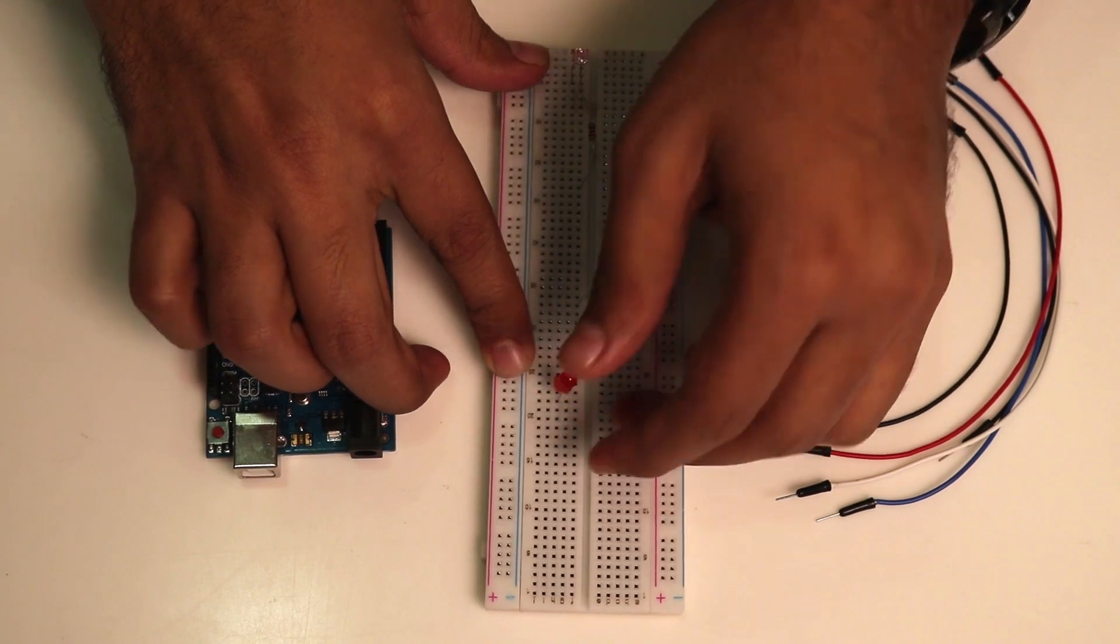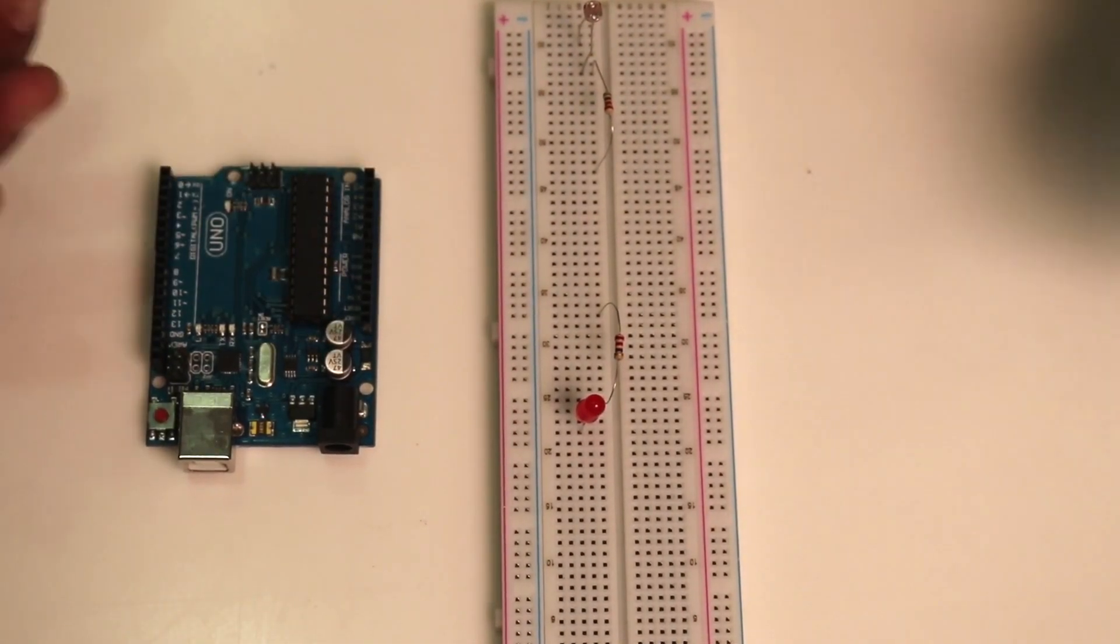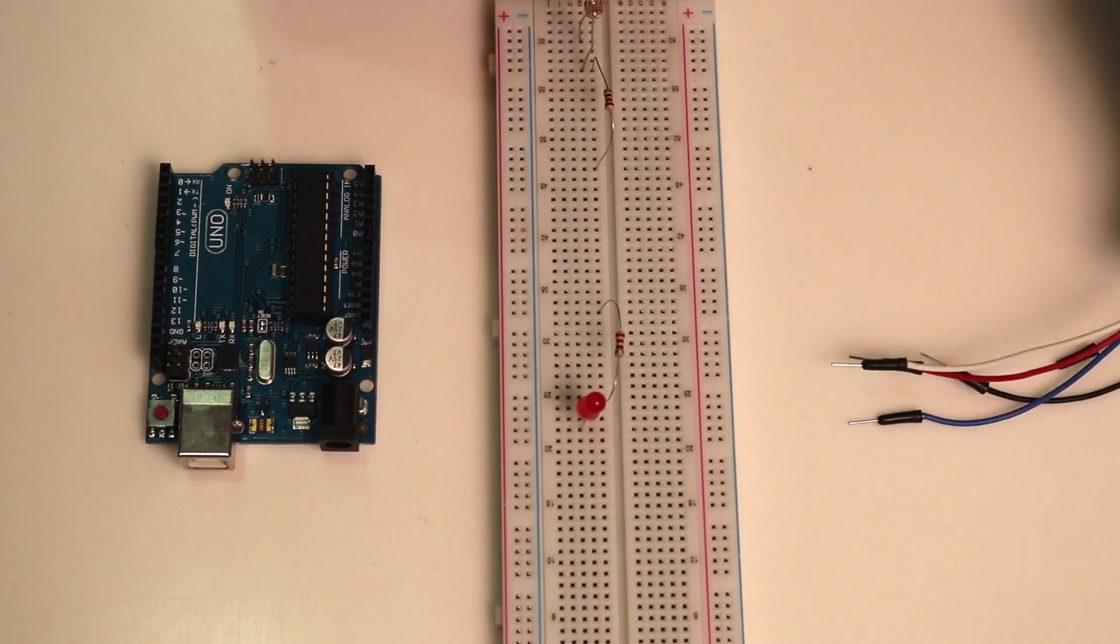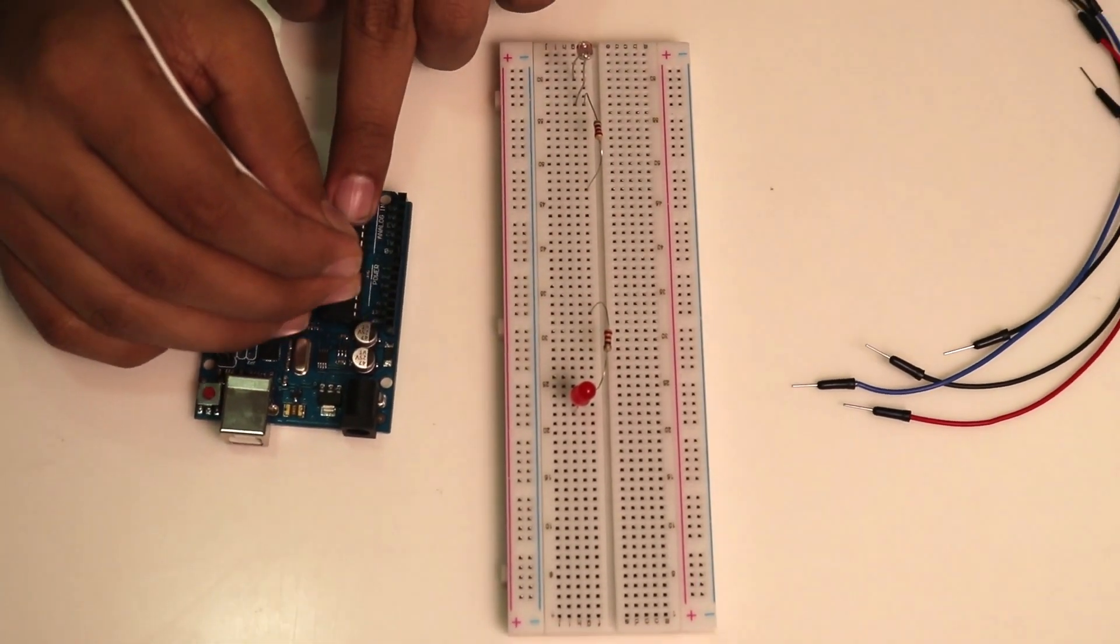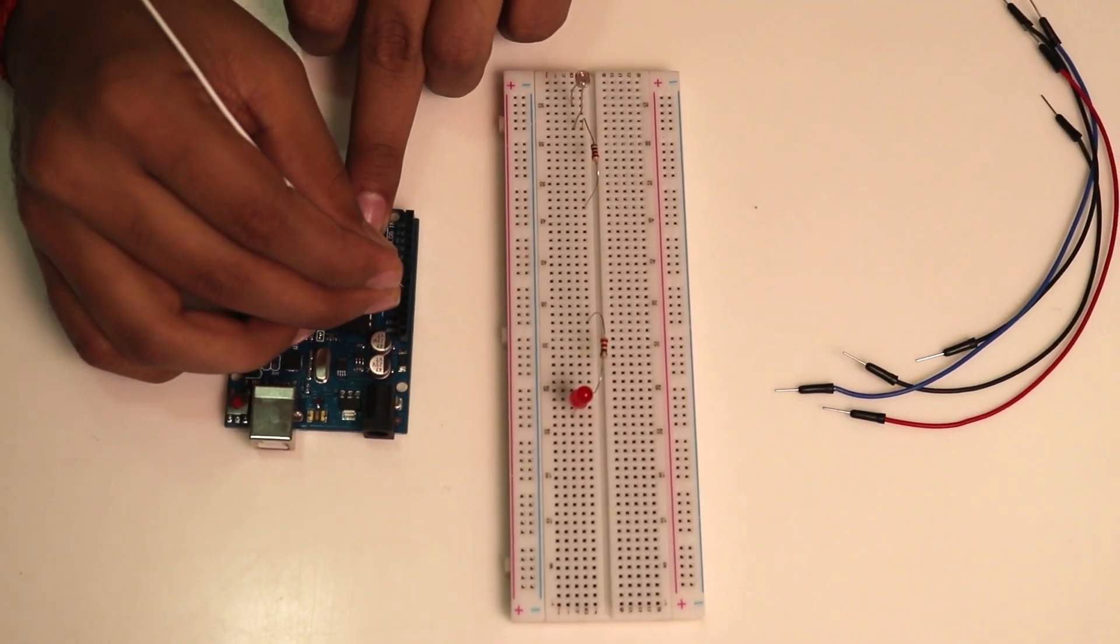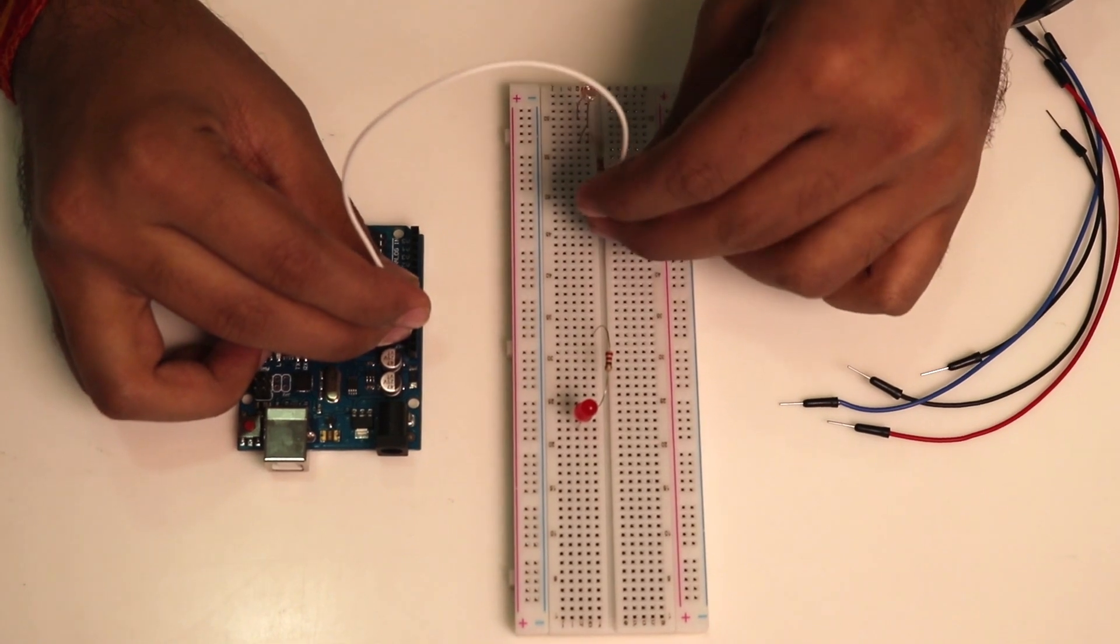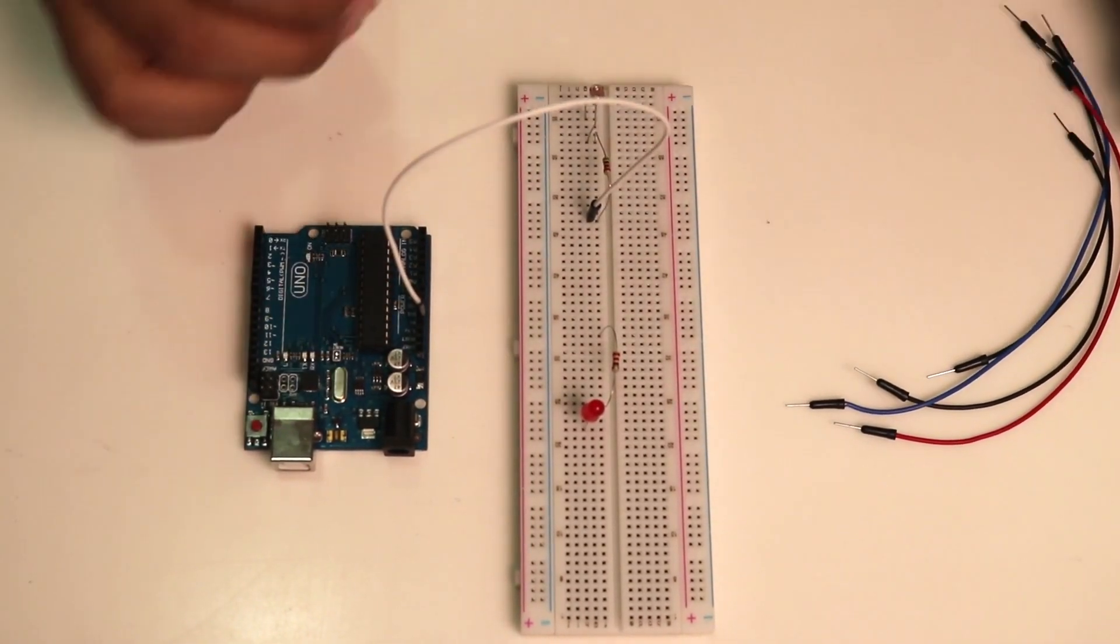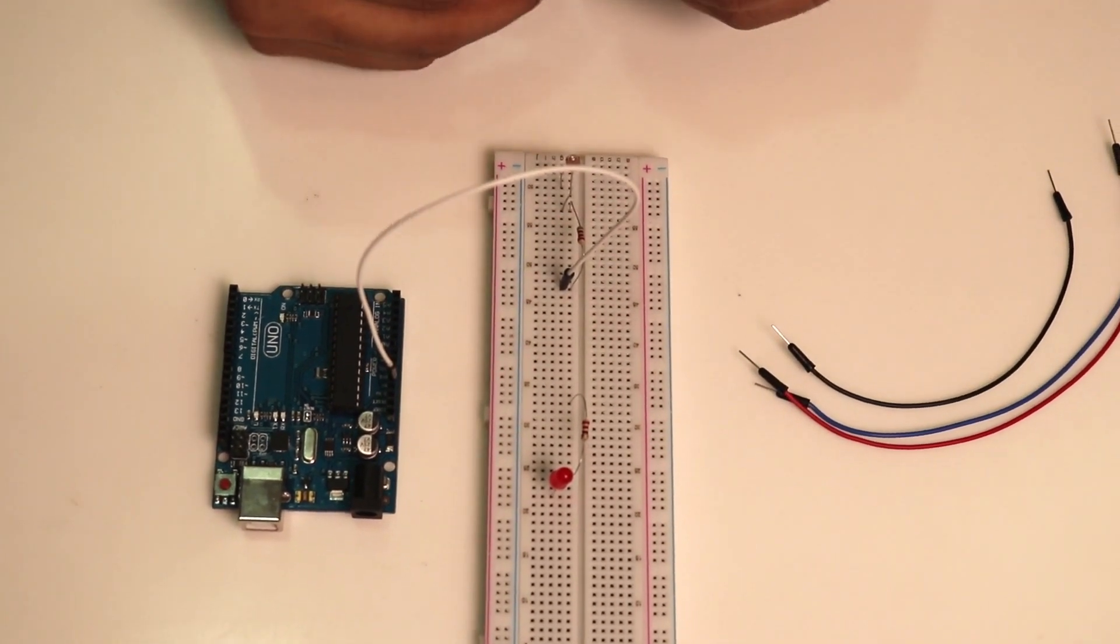Now we will connect this breadboard to the Arduino. First, connect the Arduino 5 volt to the positive leg of the photoresistor. Now connect the ground.